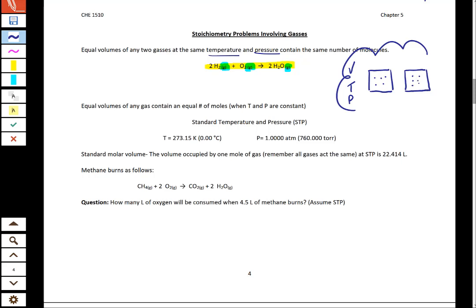So when we look at that relationship, we can really quantify it. Having the same number of molecules directly relates to the mole that we learned in Chapter 3. Because remember, a mole is 6.022 times 10 to the 23rd molecules, or atoms, or whatever particle we're considering. So when we have equal volumes of any gas, it doesn't matter the size of the molecule, we'll have equal number of moles if temperature and pressure are constant.